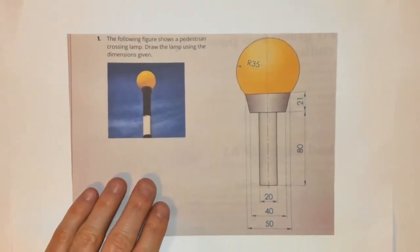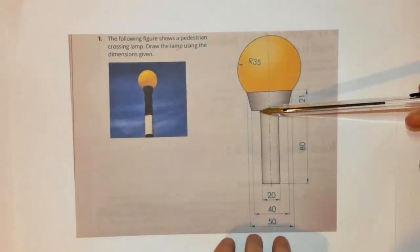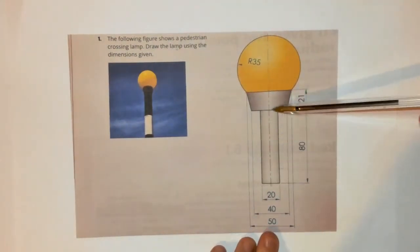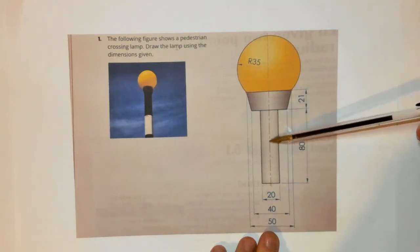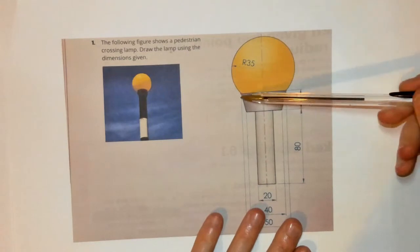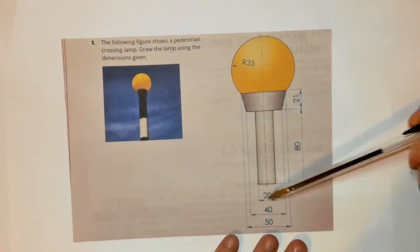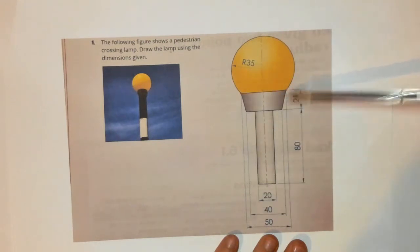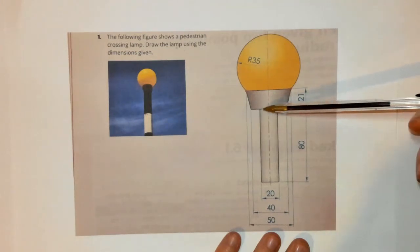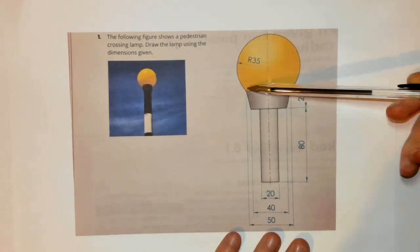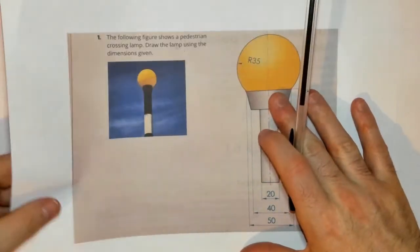It says here, the following figure shows a pedestrian crossing lamp, draw the lamp using the dimensions given. So we can see here at the bottom, we have this rectangular structure that is 20 wide by 80 height, and the center line is running up through it. We also have this tapered section here which is a height of 21, this section here is 40mm wide, and then the top section is 50mm wide. So from the center out to here it is going to be 20 and 20, and from here it is going to be out 25 and 25. We will build it up to that before we get on to this section up here, which will explain the principle.